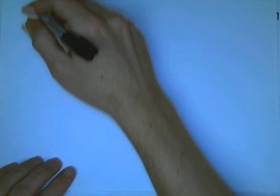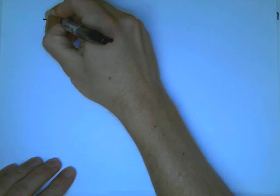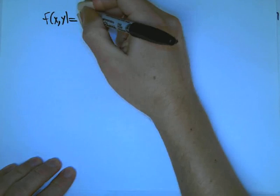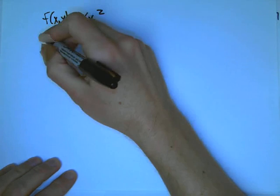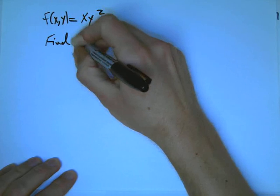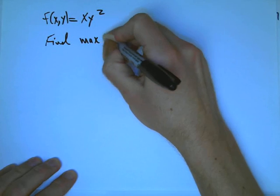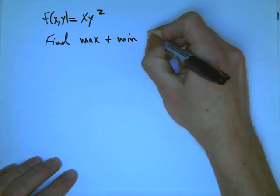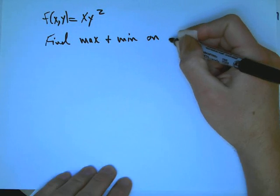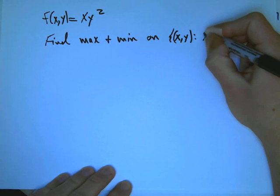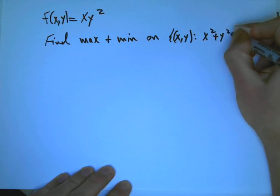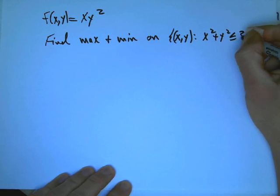Here's an example of an absolute max min problem for two variables. Our function is f of x, y equals x times y squared. And we want to find the absolute max and min on a disk, the set of x, y such that x squared plus y squared is less than or equal to 3.